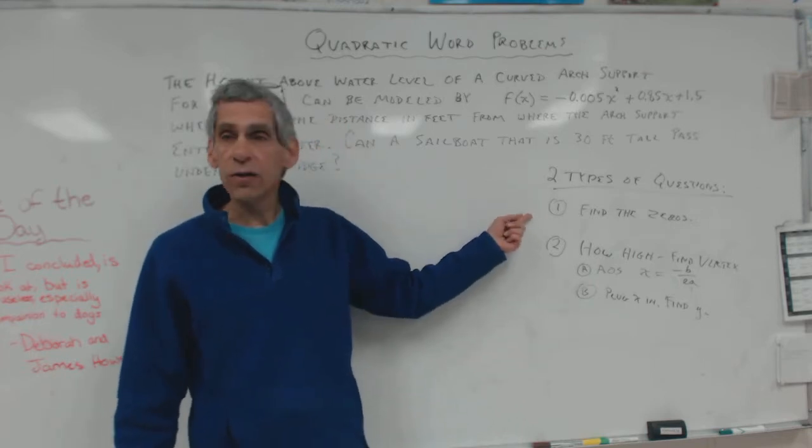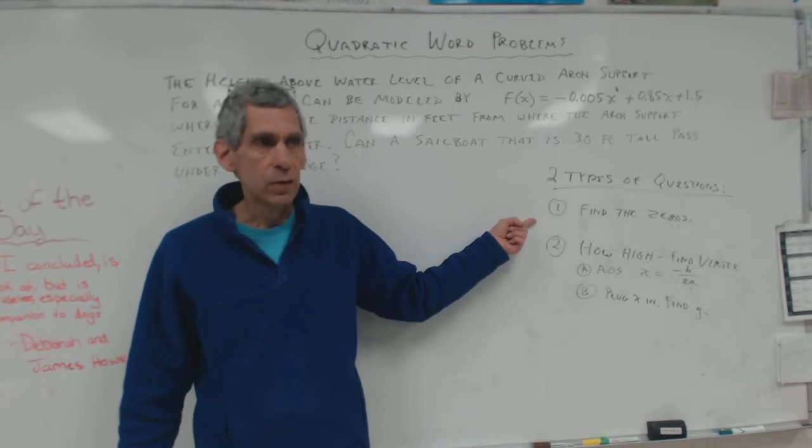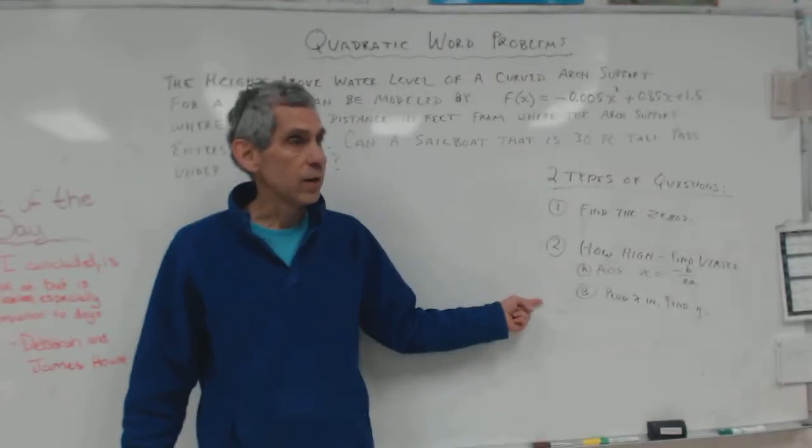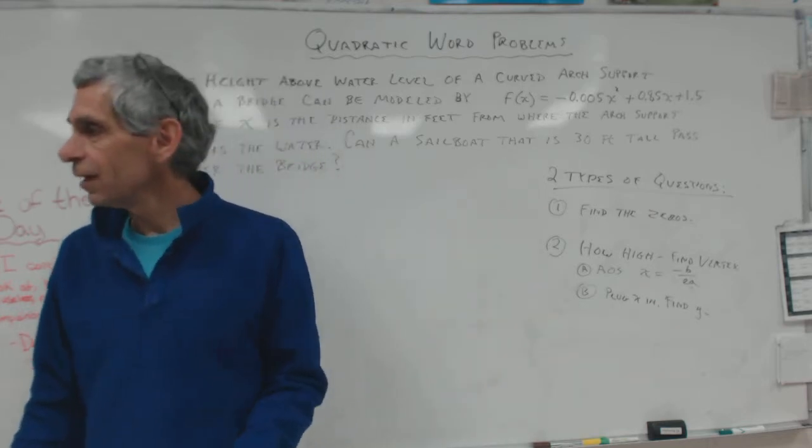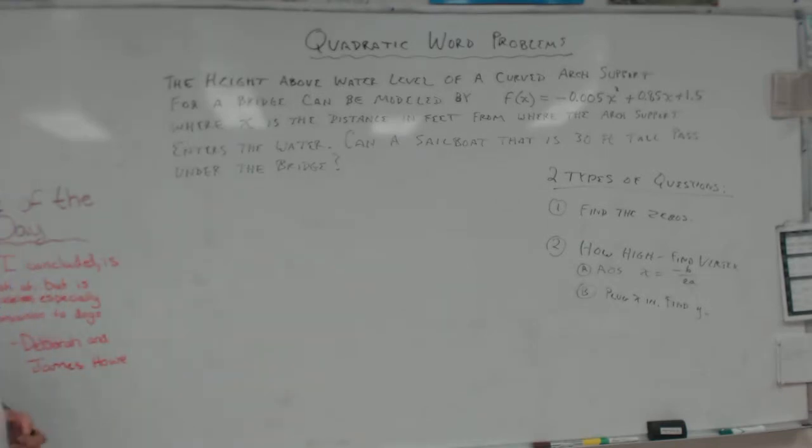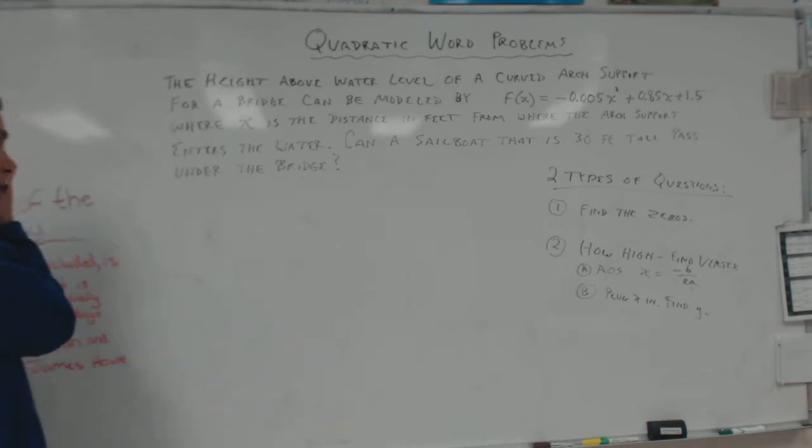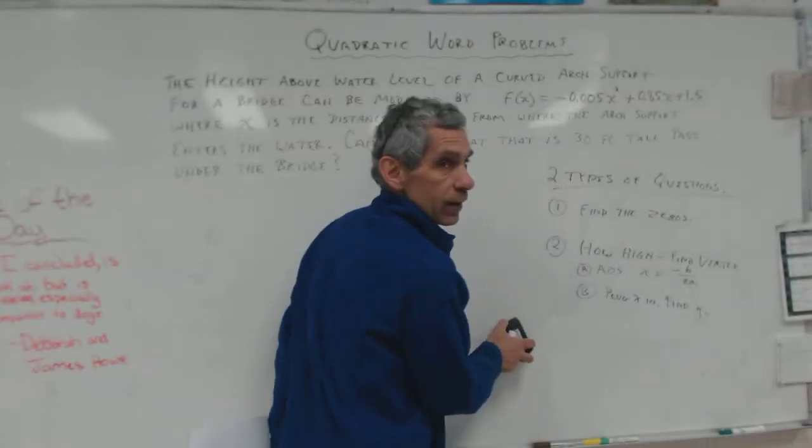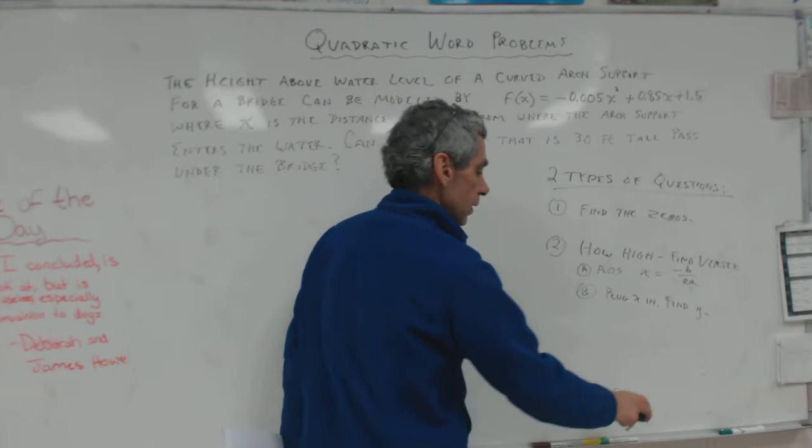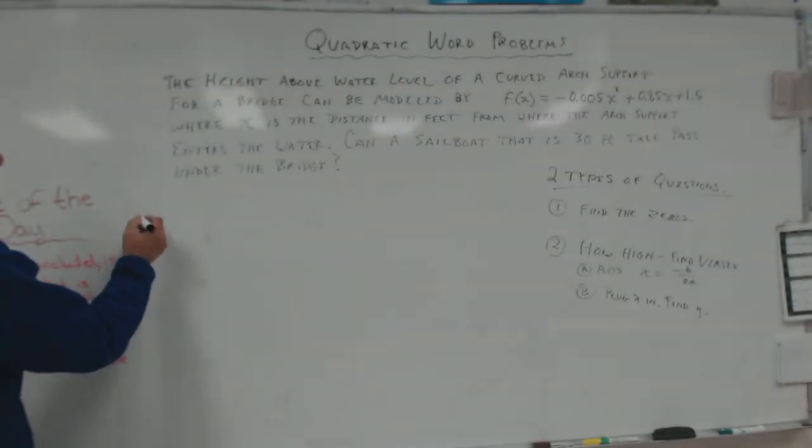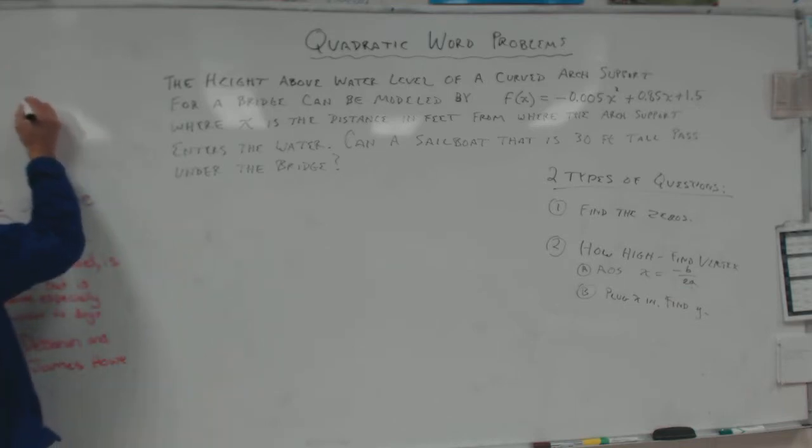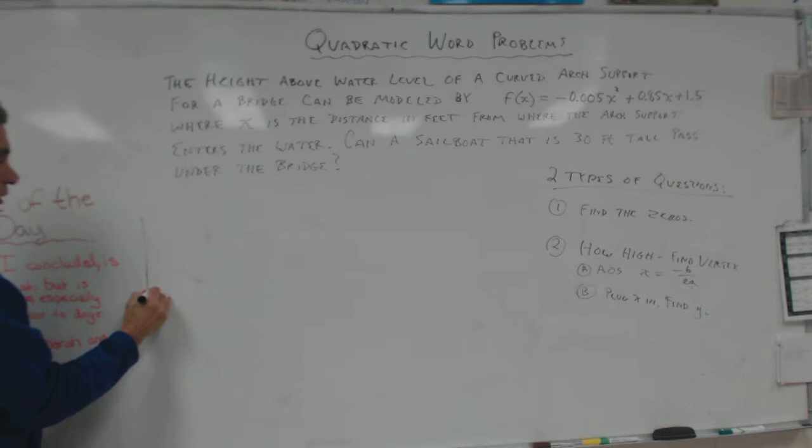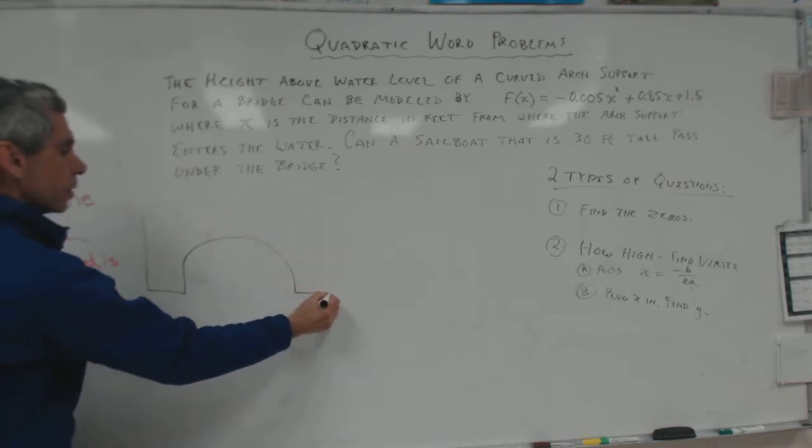It's so easy if you understand that. All you're ever asking, are they asking me to find the zeros when it hits the ground? Or are they asking me to find the height? The maximum height. That's the vertex. That's it. Piece of cake. All right. So, now let's look at this. The height above the water level of a curved arch support for a bridge can be modeled by that. Let's draw our bridge. Can I erase our two types of questions now? You guys all written that down? If you haven't written that down, it's really key. Have you written that down? Can you keep it down? I think I'm going to leave it up.